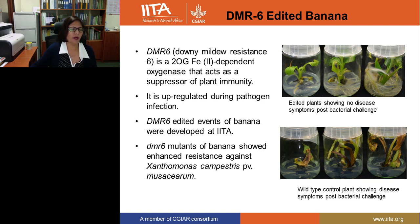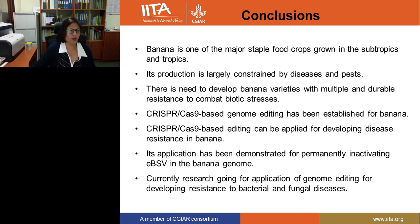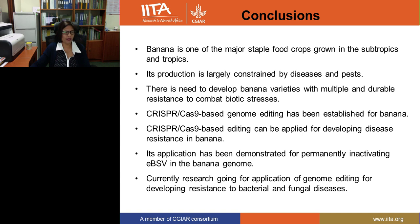We will be testing these plants further in the glasshouse to confirm our results. In conclusion, banana is a major staple food crop in the subtropics and tropics, and its production is largely constrained by diseases and pests. There is a need to develop banana varieties with multiple and durable resistance. CRISPR-Cas9-based genome editing has been established in banana in our lab, and we have demonstrated its application for permanently inactivating the banana streak virus integrated into the B genome. Research is now focusing on developing resistance to bacterial and fungal diseases using genome editing.